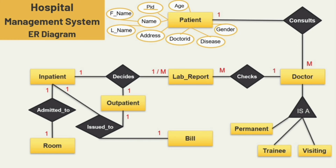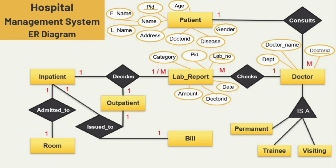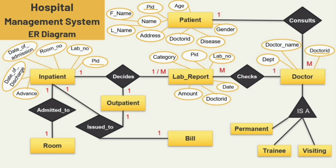For the doctor entity we have three attributes: doctor ID, doctor name, and department — doctor ID is the key attribute. For the lab report entity I am adding six attributes: lab number, patient ID, category, date, doctor ID, and amount — lab number is the key attribute here.